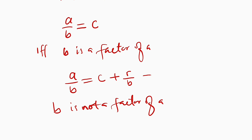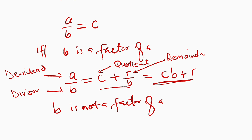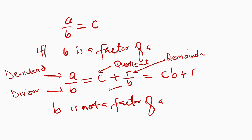This can also be written as cb plus r, where a is the dividend, b is the divisor, c is the quotient, and r is the remainder. So if you multiply c and r over b by b, you obtain this form. You can either write your result in this form or in this form. If you divide a polynomial without remainder, you only obtain the quotient. But if there is a remainder, you write it in one of these two forms.